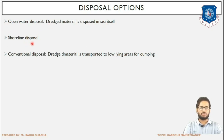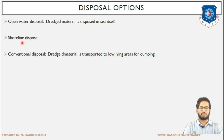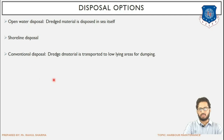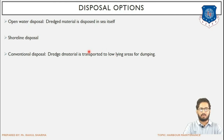Third is conventional disposal — the dredged material is transported to a low-lying area for dumping. A specific area is allocated, which may be a low-lying area where embankment or filling is needed. The material is transported there and deposited layer by layer through compaction using heavy compactors, filling the embankment.